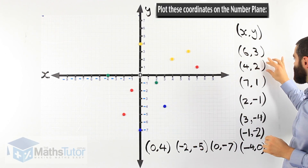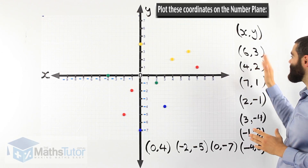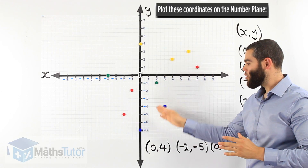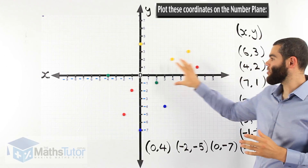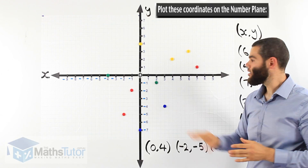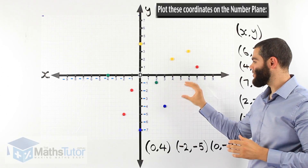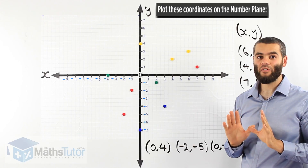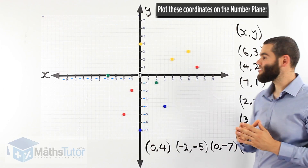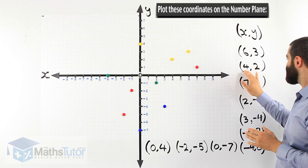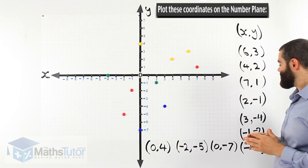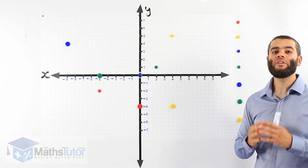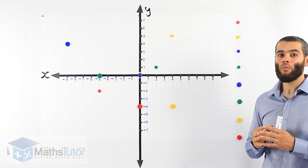So the points are given as coordinates and we follow the rule of starting on the x-axis first, then going to the y-axis. We plot them on the number plane — x then y, x then y, x then y. This is how we plot coordinates on the number plane.